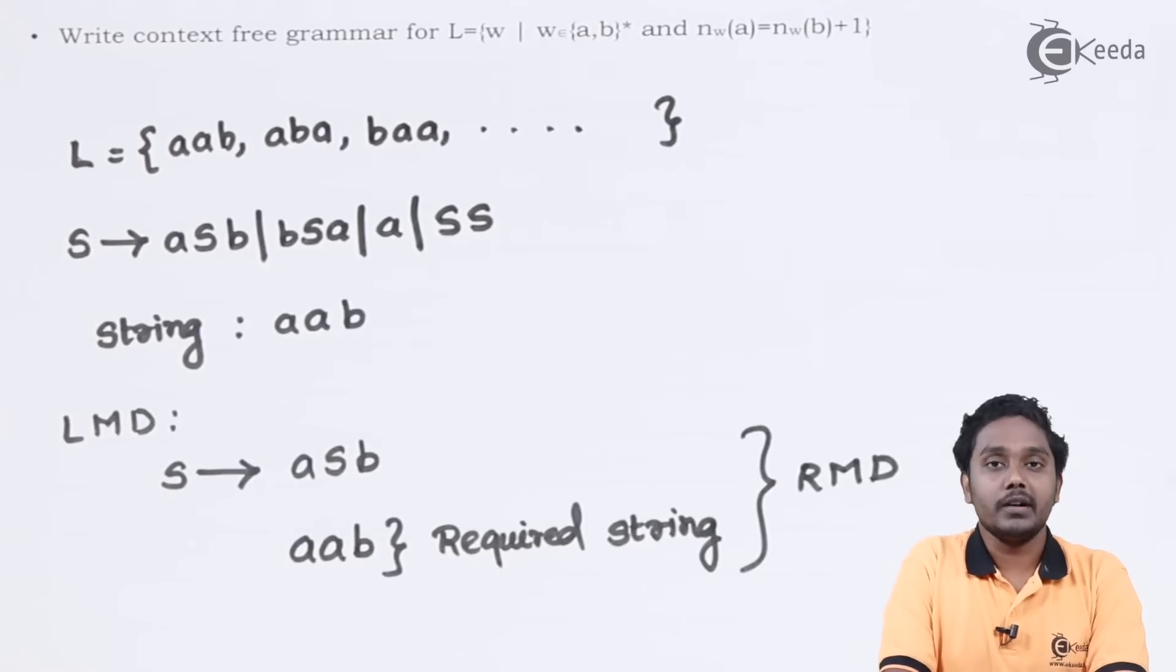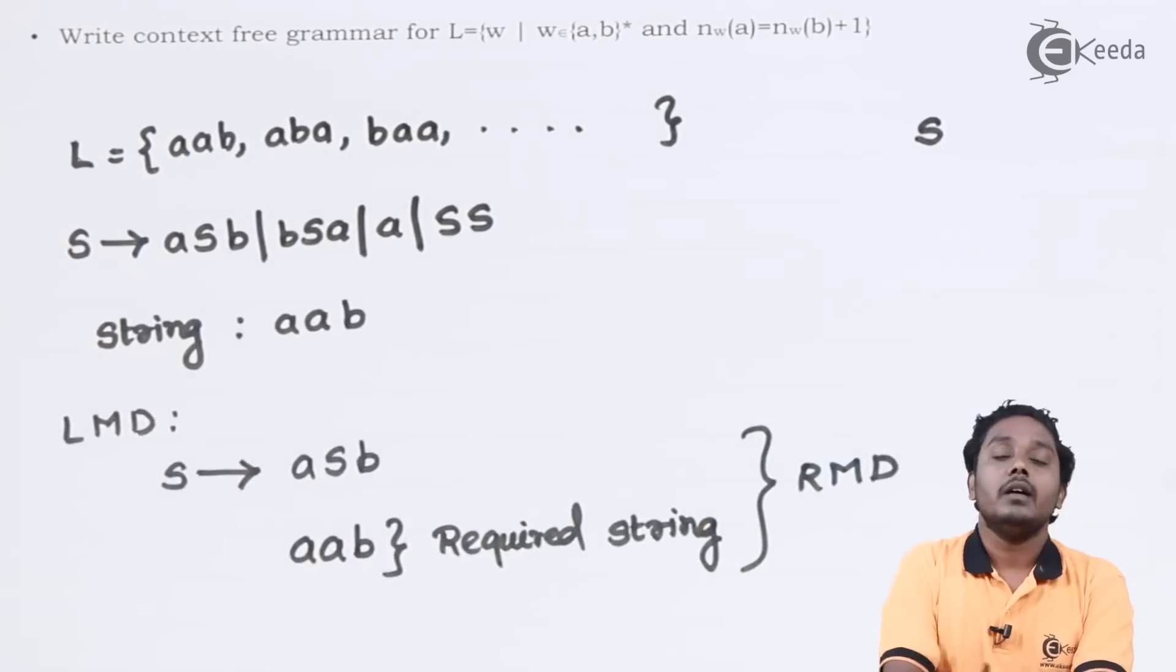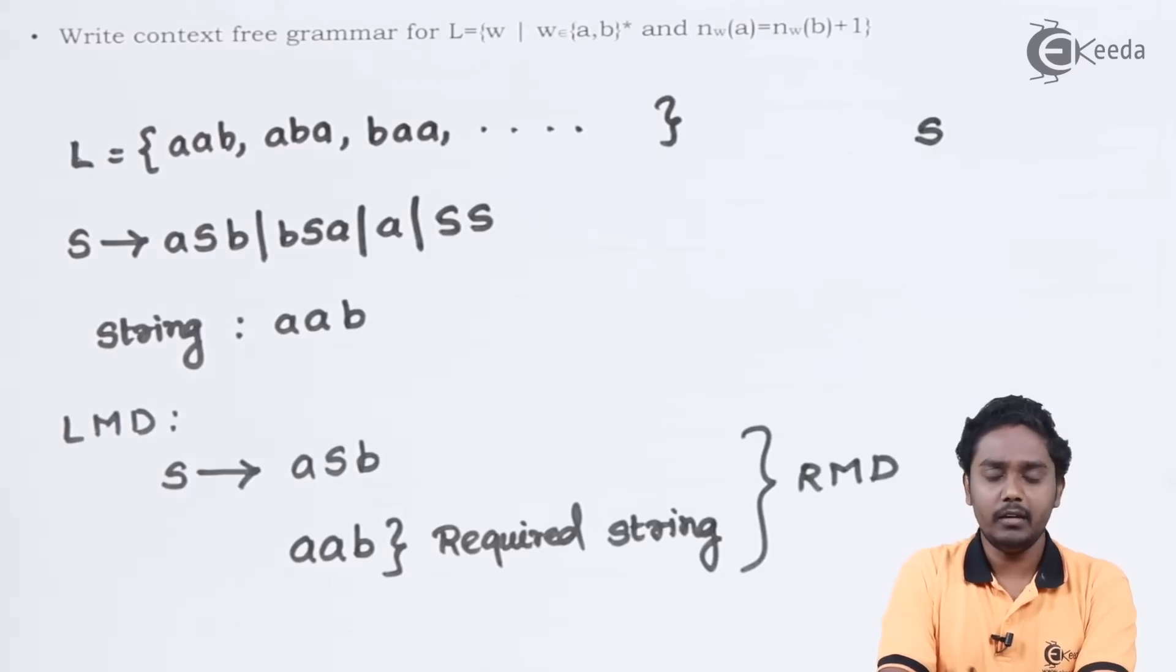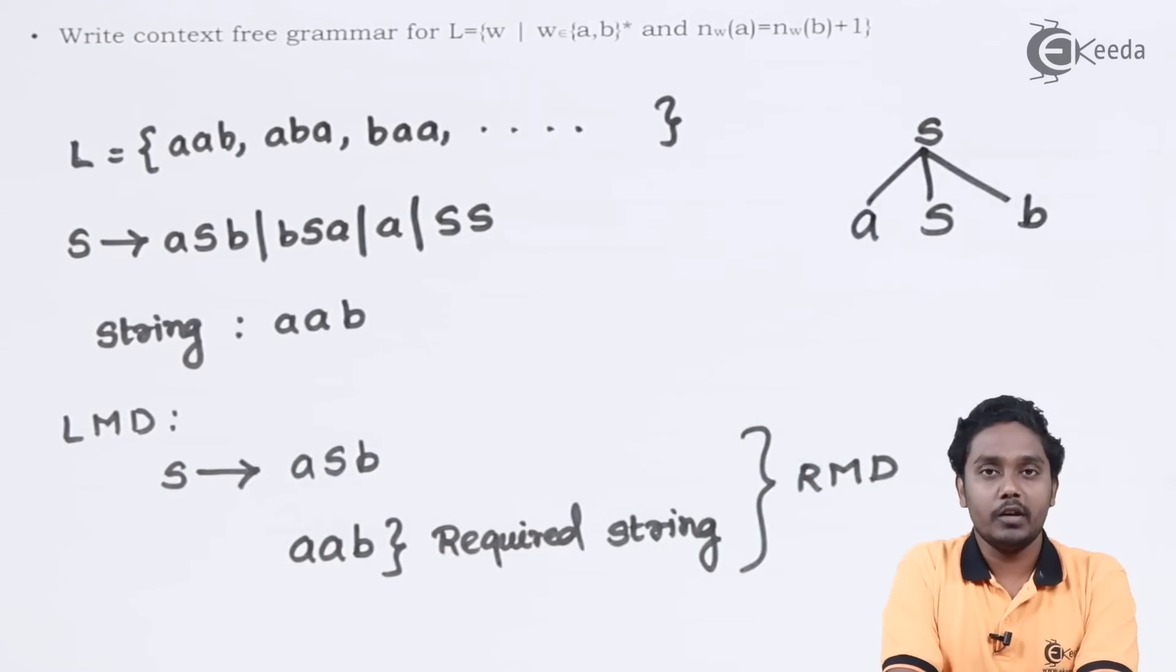Let us try to draw the parse tree for the same. S would be our root because S is the start symbol. We are using the production S produces ASB. Over here, we have produced one pair of A and B. We need one more extra A, which will be produced using S produces A.